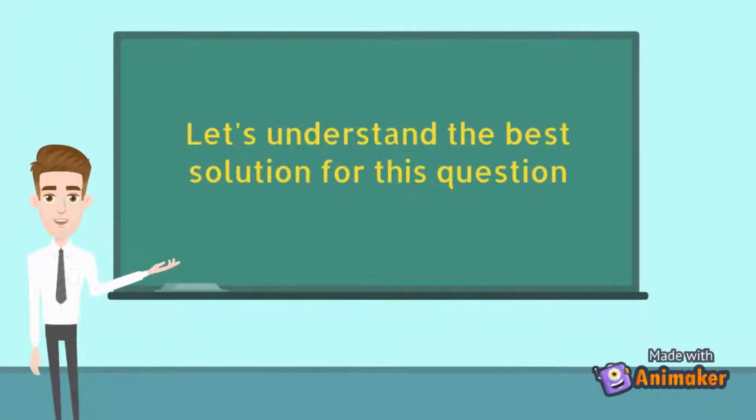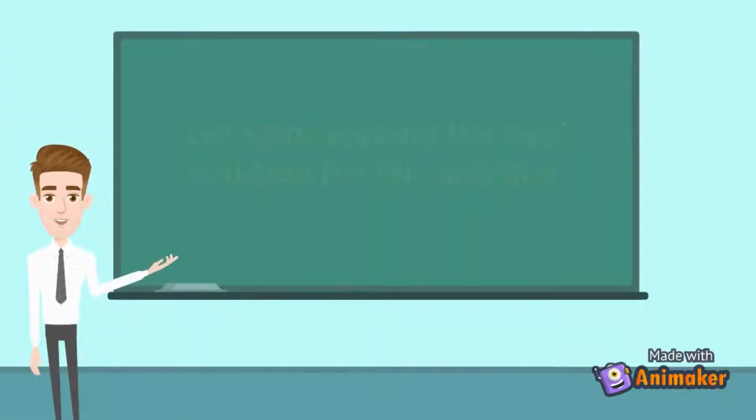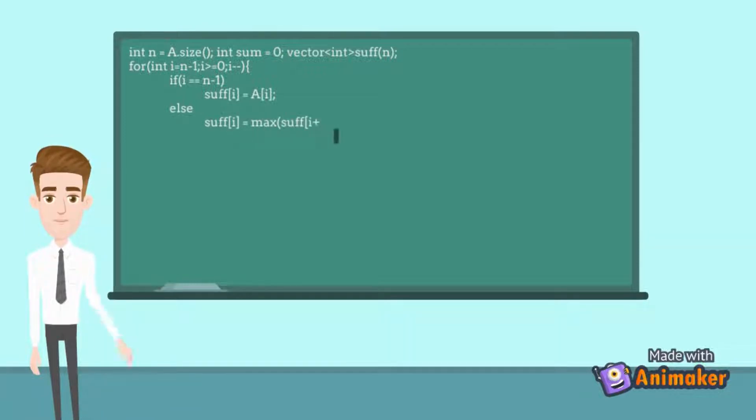Let's understand the best solution for this question. Our approach is that we will fix the middle element and try to find the largest smaller number from left and maximum number from the right at the same time. To find the maximum from right, we will make a suffix array that will contain the maximum element from the right end of the array.